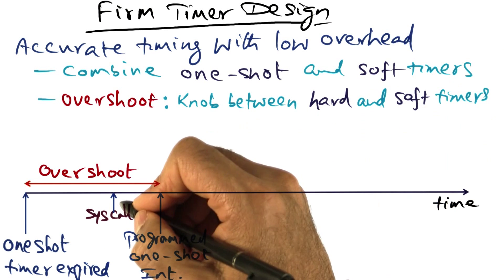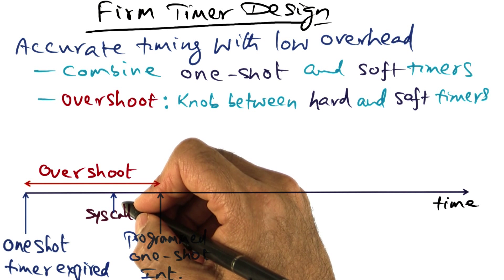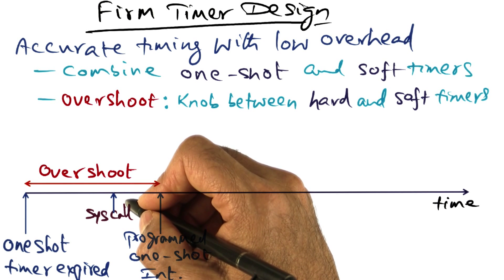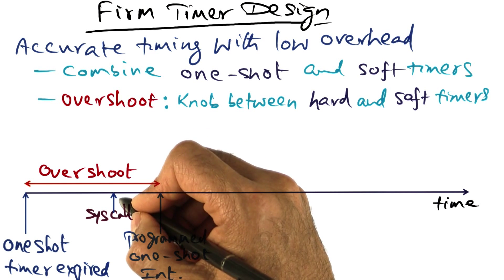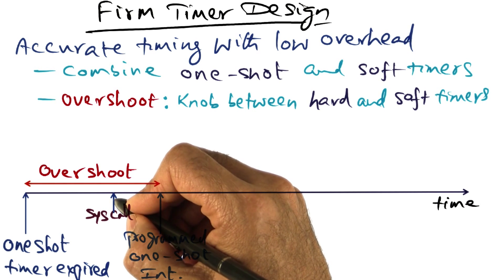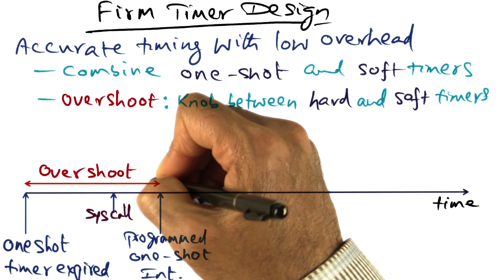Applications typically make system calls, or there could be an external interrupt. Any of those things can bring you into the kernel, and so you may be already in the kernel at this point, during this overshoot window.